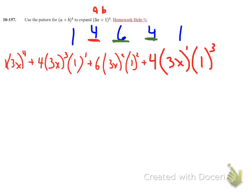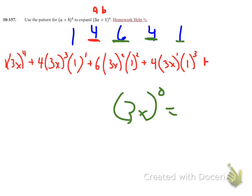And my next term will then have my coefficient of 1, and my 3x will now be to the 0 power, which equals 1, so I don't have to write that. So I have my coefficient of 1, and then I have my b value which is 1 to the 4th.